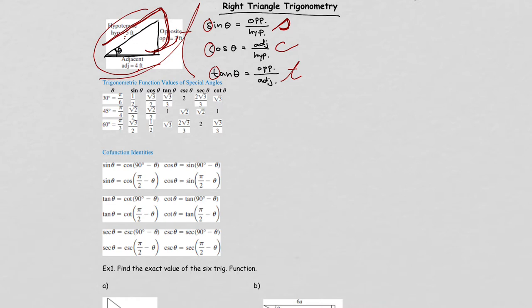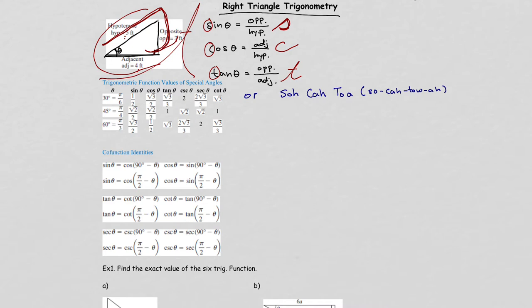The other way of doing it is SOHCAHTOA. SOH means sine is opposite over hypotenuse. CAH means cosine is adjacent over hypotenuse. TOA means tangent is opposite over adjacent. Either way, you should be able to memorize this, but throughout the class, the cursive method is the one I'll be using.